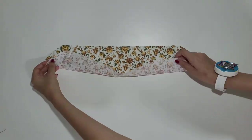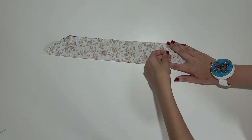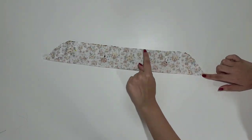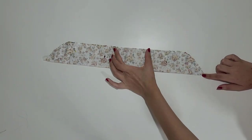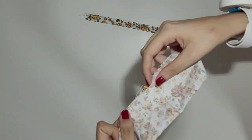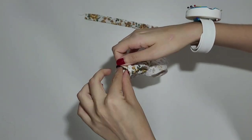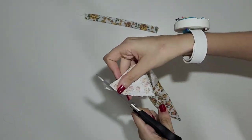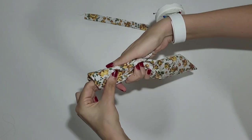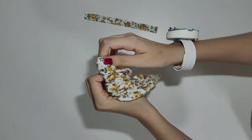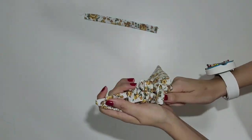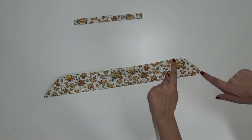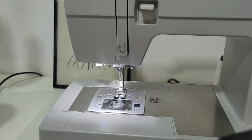Now for the bow, fold it in half and sew it with a 1cm seam allowance, leaving a space of around 3 fingers without sewing. Now turn it inside out. Now topstitch it around the entire edge.